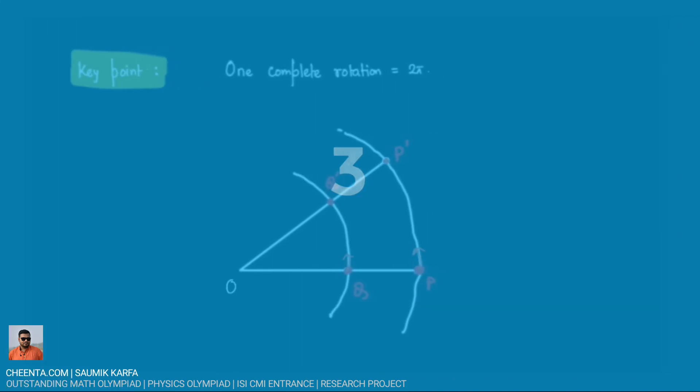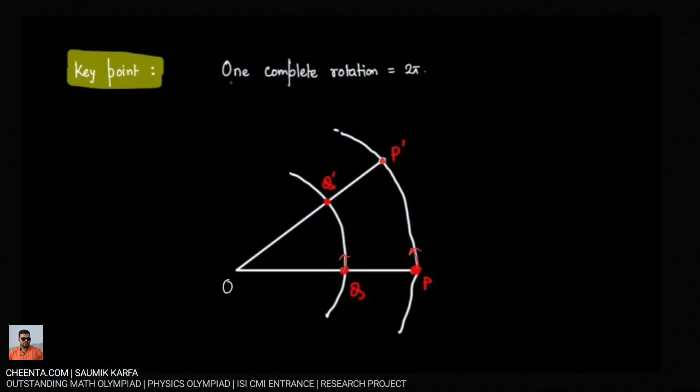The key idea of this problem is to understand that one complete rotation is equal to 2π. Now what is rotation? Let's say there is a point P which is moving on a circular arc or which is moving on a circle. So we moved P on a circle and this is the new position P prime.